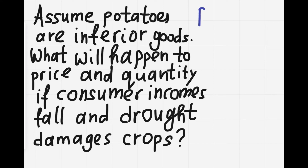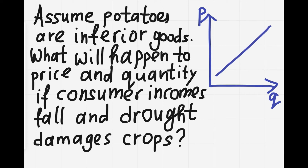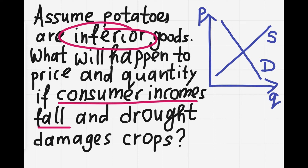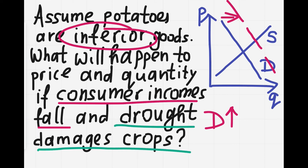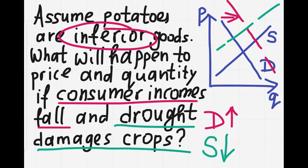Look at this problem. Assume that potatoes are inferior goods. What will happen to prices and quantities of potatoes if consumer incomes fall and drought damages crops? This question has two events, so we'll have two shifts. First event: consumer income falls. Because potatoes are inferior goods, when incomes fall the demand for potatoes rises and the demand curve shifts to the right. Second event: drought damages crops. This will damage supply — the supply falls and the supply curve shifts to the left. The market moves from point A to the new equilibrium point B. As it moves from A to B, the price rises and the effect on quantity is unclear.